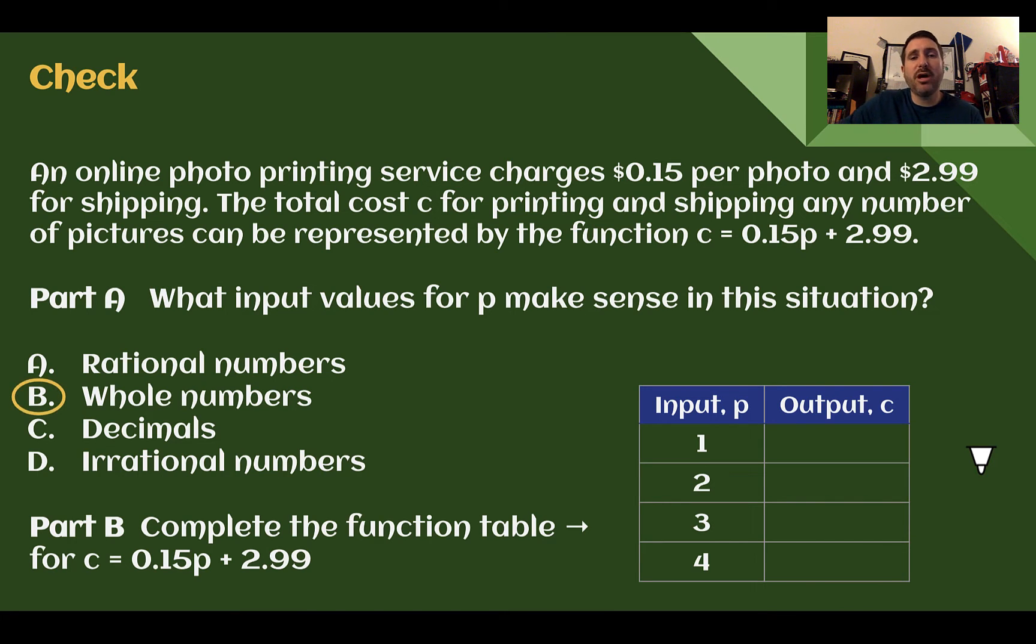Check your answer. First, in part A, in this situation, we would need to use whole numbers. So if we look at what is happening, they're charging per photo. We're not going to have parts of photos. P is what we need for our input for our rule. C would be our output, and we can see that down here. We have to be able to have whole photos. So the only thing that makes sense is whole numbers. Decimals don't make sense. Rational numbers, again, include fractions and decimals. That doesn't make sense. Irrational numbers doesn't make sense either. Those are usually messy decimals or not perfect square roots. Integers might make a little more sense than these others, but we don't want negative photos. So whole numbers really is the only one that makes sense.